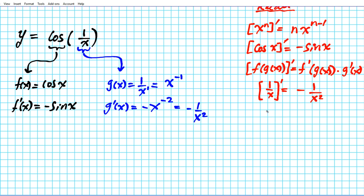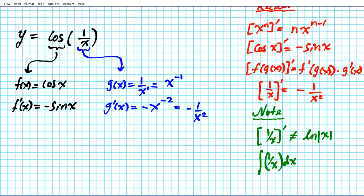This is very important — it's a common trap. The derivative of 1 over x is NOT the natural logarithm of x or the natural logarithm of the absolute value of x. That's false. The integral of 1 over x is the natural logarithm of the absolute value of x plus C. Most students confuse these, so keep it in mind.